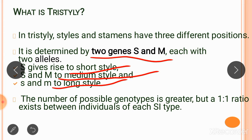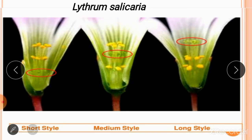In tristyly, the number of possible genotypes is greater, but always in a 1:1 ratio. If you cross a short-style flower with a long-style flower, 50% of progeny will bear short-style flowers and 50% will bear long-style flowers. If you cross a short-style flower with another short-style flower, the cross is incompatible. This condition can be observed in the family Lythraceae.